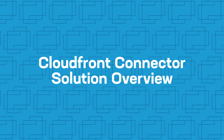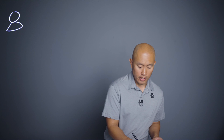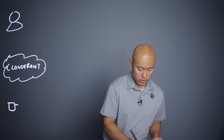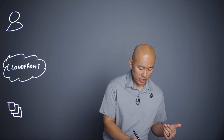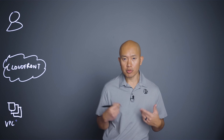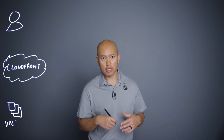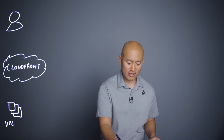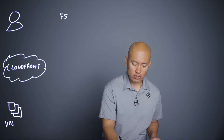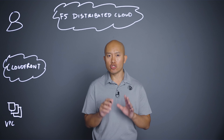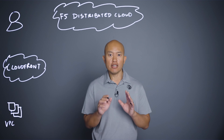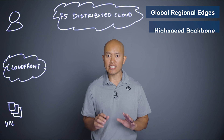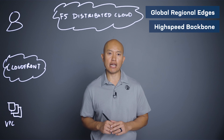Here's how this solution works: you have a client, you're using CloudFront, and you have your origin servers. Those origin servers might be in a VPC, another cloud environment, hosted on-prem in a co-location — wherever they might be. With that infrastructure drawn out, I'll illustrate F5 Distributed Cloud. Even though I'm drawing this as a single object, F5 Distributed Cloud is made up of a number of regional edges located around the world, connected via an extremely fast network backbone.